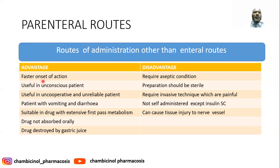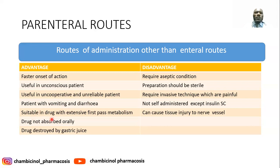For the parenteral route, advantages include: first onset of action — useful in emergencies; useful for unconscious or uncooperative patients, for example those vomiting; suitable for drugs with extensive first-pass metabolism like propranolol; and used when the drug is not absorbed orally. Intravenously, the drug reaches directly into systemic circulation, with bioavailability of 100%.